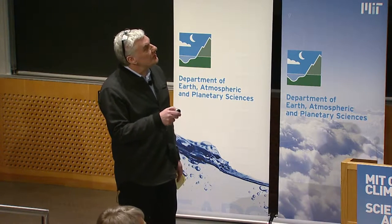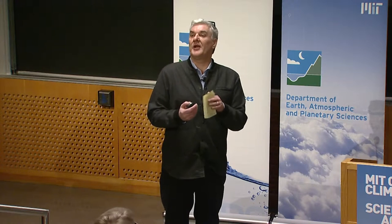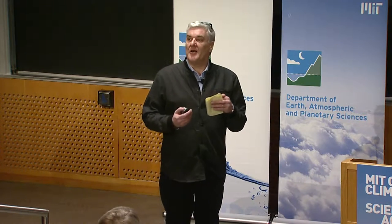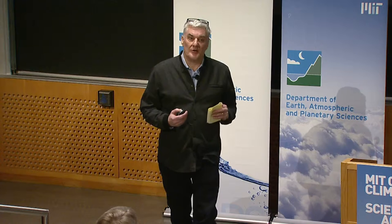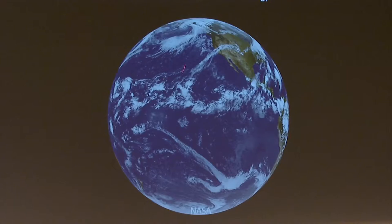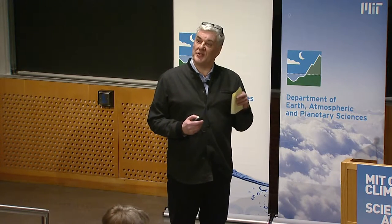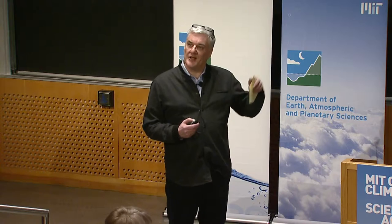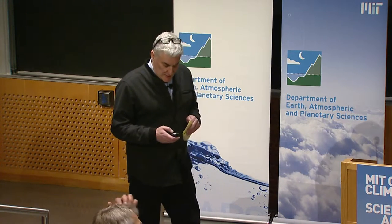One of the things you can notice here is that there's a band of cloud north of the equator. This is known as the intertropical convergence zone — the place where we get a maximum in tropical precipitation. David McGee showed us a picture of this. It's actually north of the equator in the annual mean, and the ocean plays an important role in setting this interhemispheric asymmetry in climate.